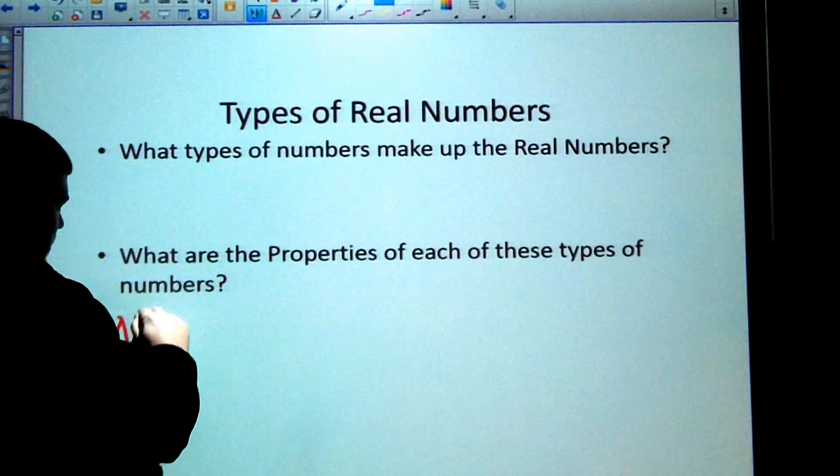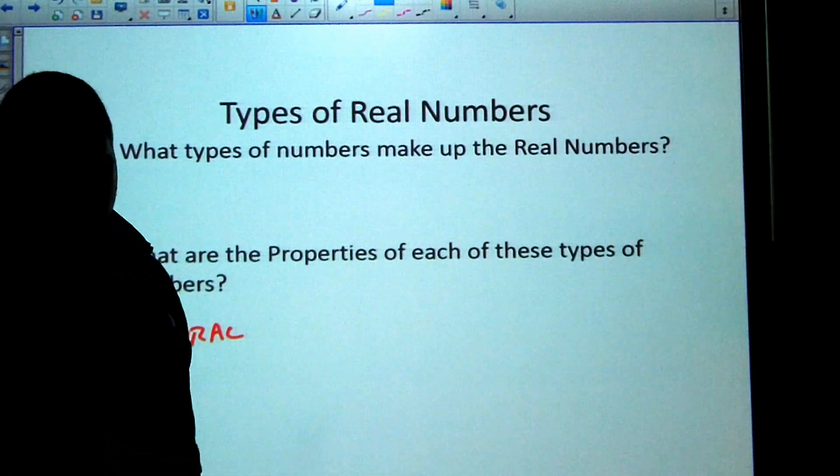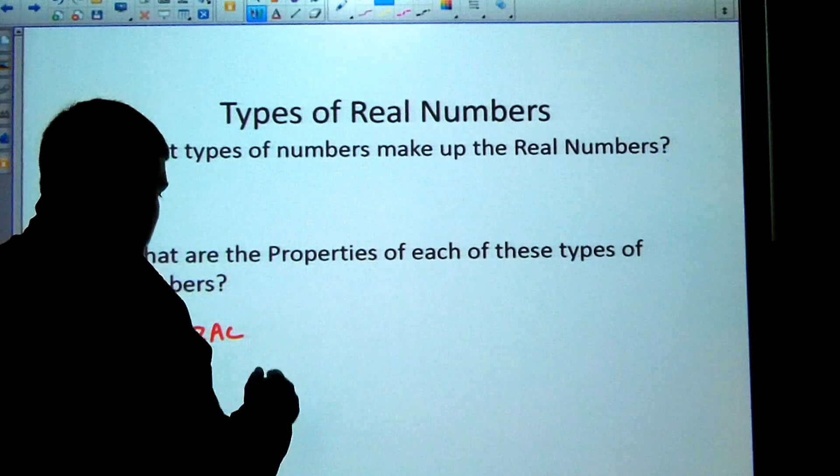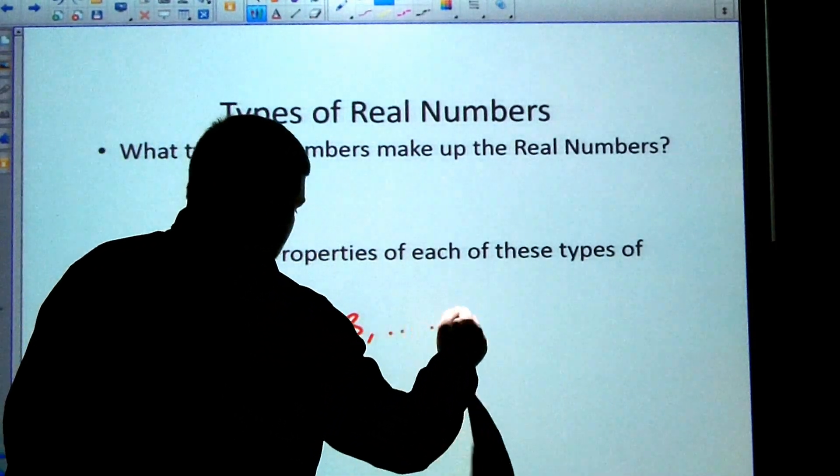The natural numbers are kind of like your counting numbers when you're playing hide and seek: one, two, three, four, et cetera. So that's 1, 2, 3, et cetera.